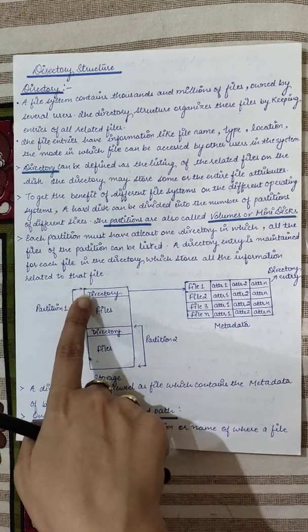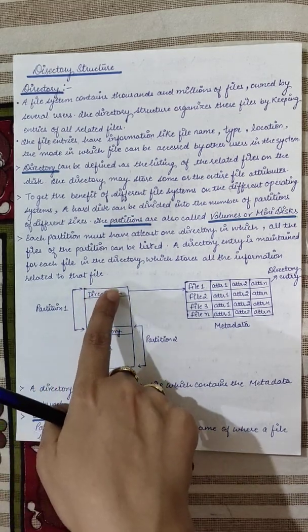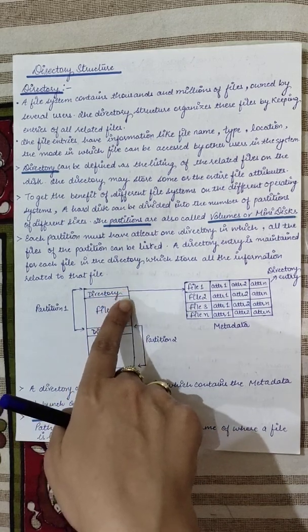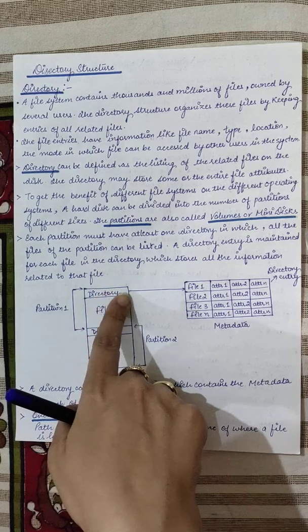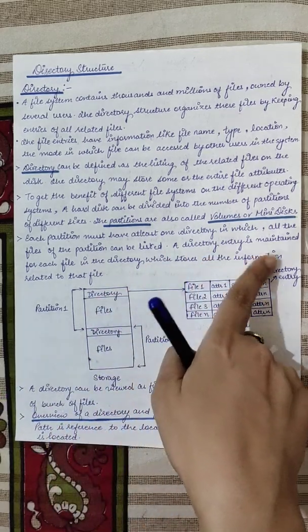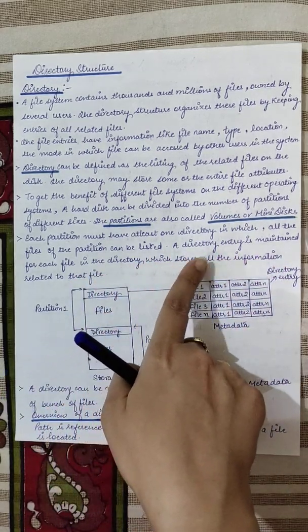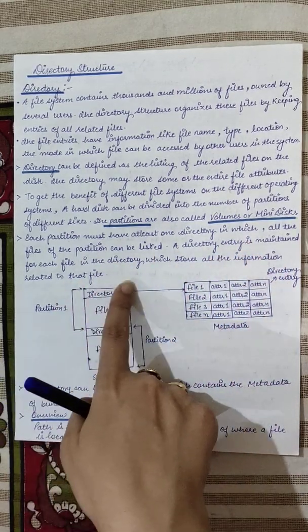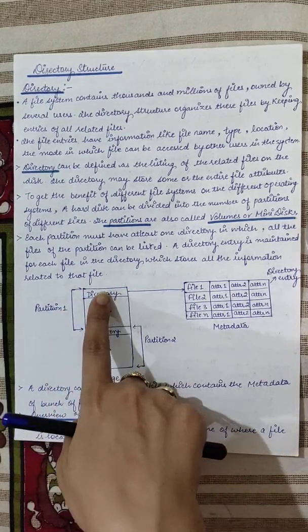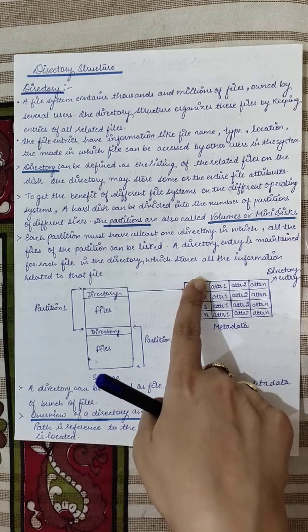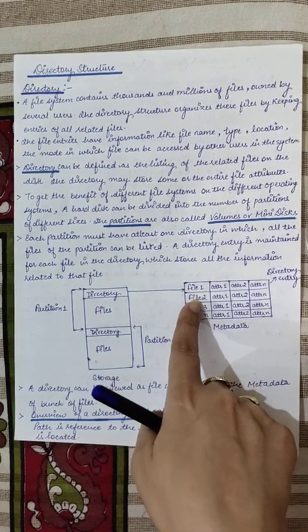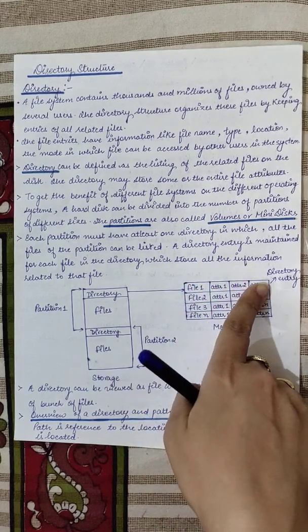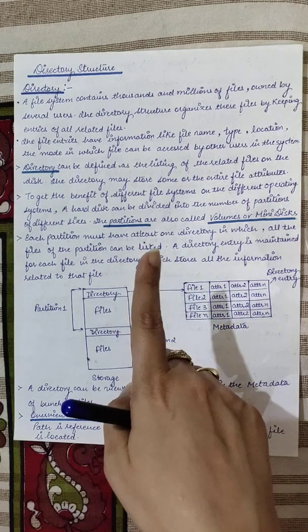Just like partition one has a directory and partition two has a directory — in that directory there will be a list of the files present in that partition. A directory entry is maintained for each file, which stores all the information related to that file. For example, file number one, file number two, up to file number N, each having attributes that we have seen in the last video.